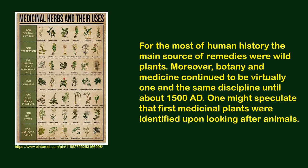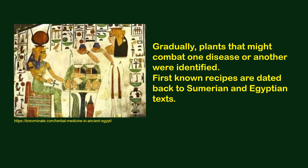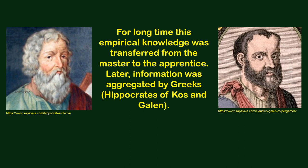For most of human history, the main source of remedies were wild plants. Moreover, botany and medicine continued to be virtually one and the same discipline until about 1500 AD. One might speculate that the first medicinal plants were identified upon looking after animals. Gradually, plants that might combat one disease or another were identified; the first known recipes are dated back to Sumerian and Egyptian texts.